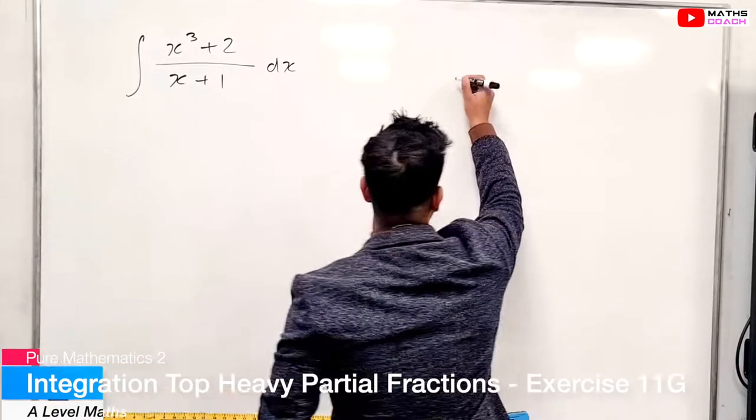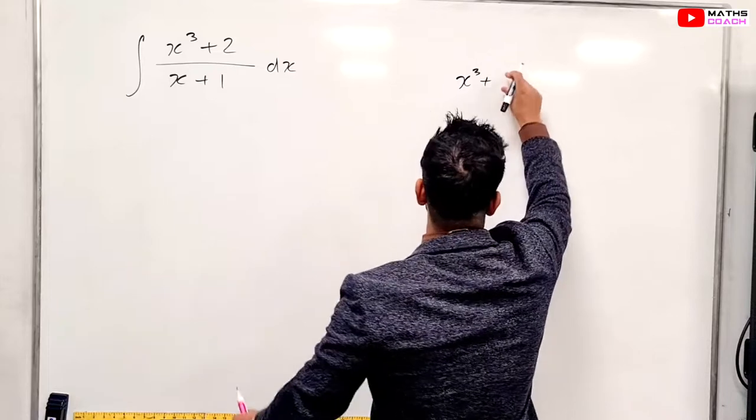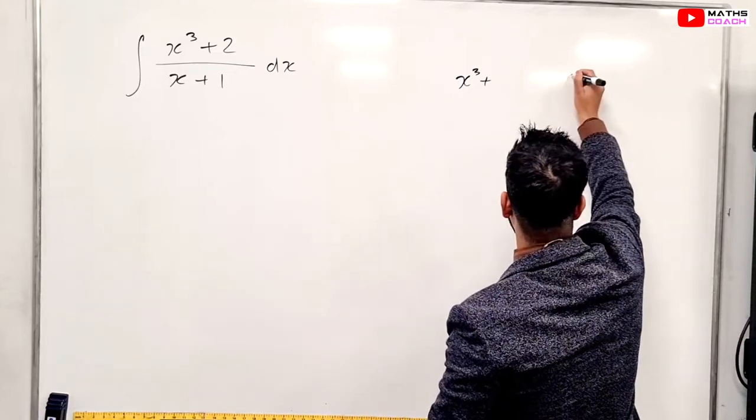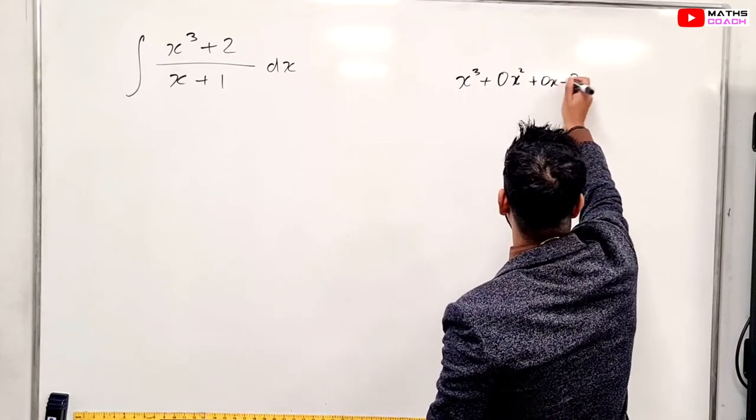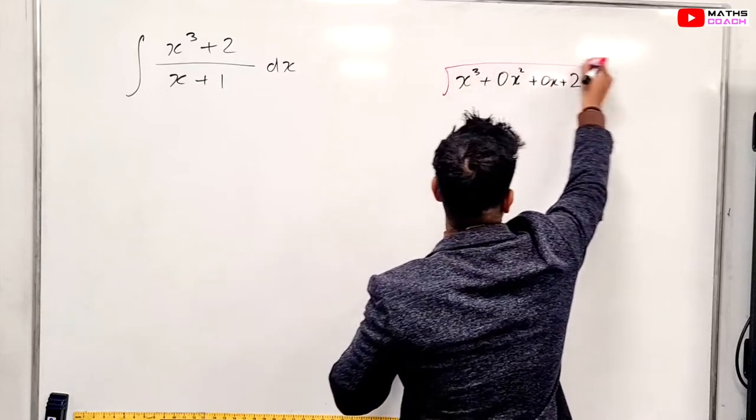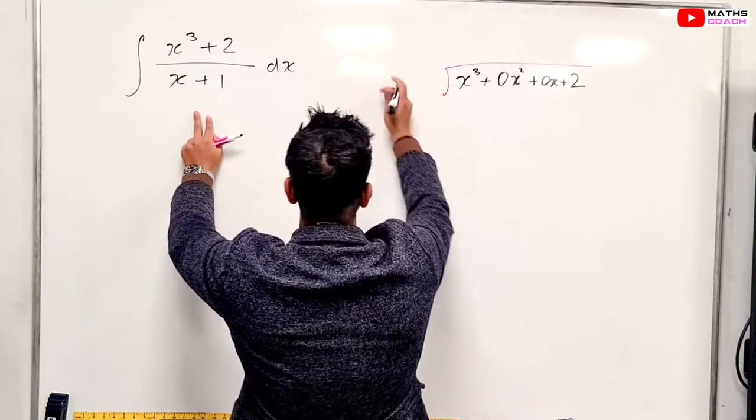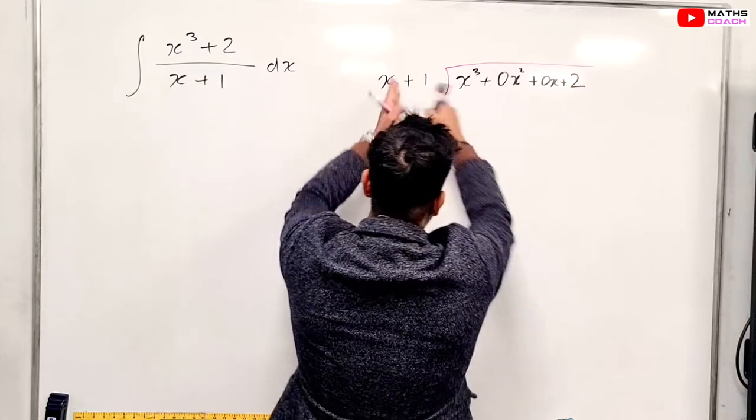So we will break it down using our long division, so x cubed plus 2. Now we want to go down in order, so the 2 would really be here and we'll have 0x squared plus 0x and then our plus 2. And let's just divide that and here we'll have our x plus 1.